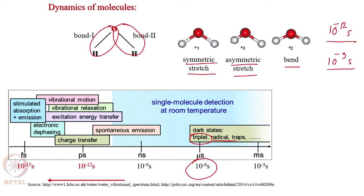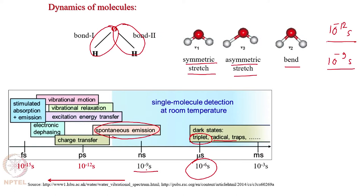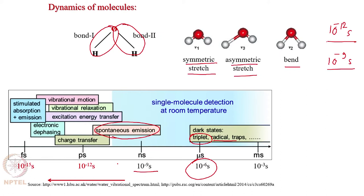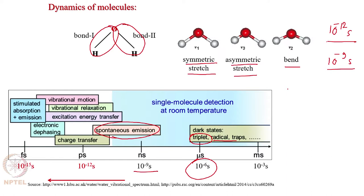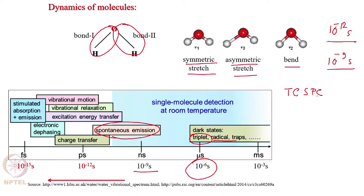Spontaneous emission of fluorescence has a lifetime on the order of a nanosecond or slightly less. To understand that, you need a device which works on a much faster time scale. Up to about 100 picoseconds, we can still use electronics. For fluorescence lifetime measurement, there is a method known as Time-Correlated Single Photon Counting - TCSPC. In this method, a light pulse is sent to the system, a fluorescent photon is emitted, and the detector records when the light pulse was sent and when the fluorescent photon arrives.